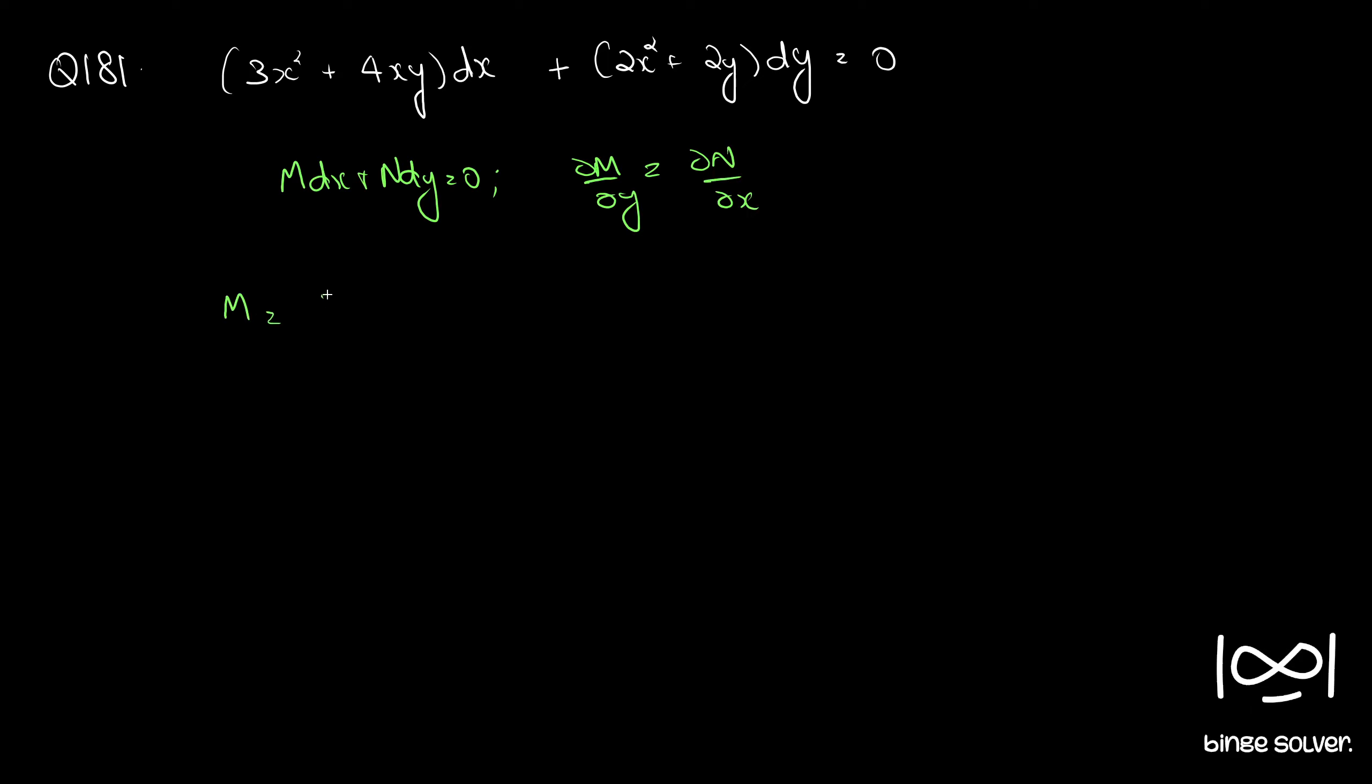M here is 3x² + 4xy and N is 2x² + 2y. ∂M/∂y becomes 4x. ∂N/∂x equals 4x. Therefore ∂M/∂y = ∂N/∂x, so the differential equation is exact.